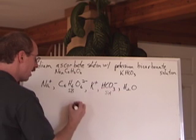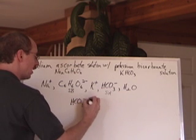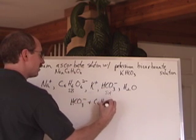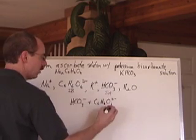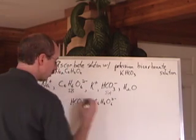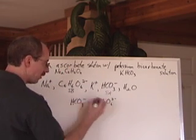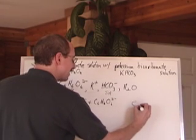Okay, now we react the two together. So HCO3 negative plus C6H6O6, 2 negative, that ion there. What's it going to do? We're going to transfer a proton from the acid to the base, and we're going to get C6,